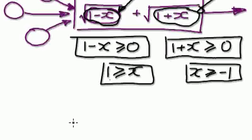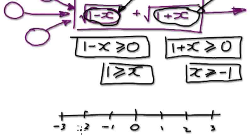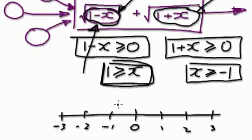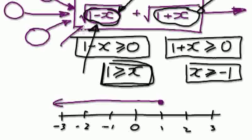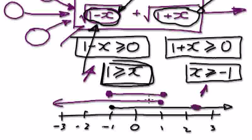So what that means on the number line is — let me draw the number line here: negative 3, negative 2, negative 1, 0, 1, 2, 3, and so on. For this not to break, you need x to be less than or equal to 1 — so everything on this side including 1 will work for this part. And for this part, you need x to be greater than or equal to negative 1. Anything in this region will work for this one, but this one breaks down on this side. So basically you need everything in between negative 1 and positive 1.